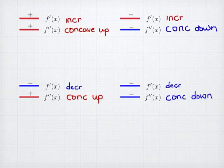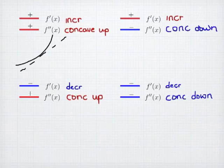In the first case, my first derivative is positive, meaning my function is increasing. The function is also concave up, which means it is bending up. So imagine a straight line shown by the dotted line — if you bend both ends up, that gives you the concave up shape. In the top right corner, we have a function that is increasing but concave down.